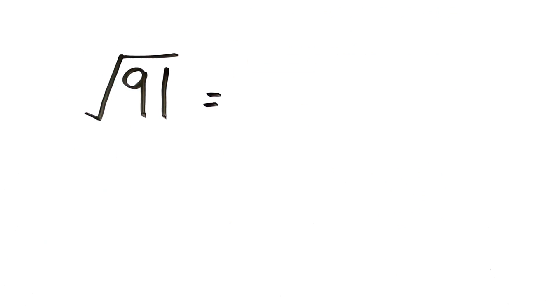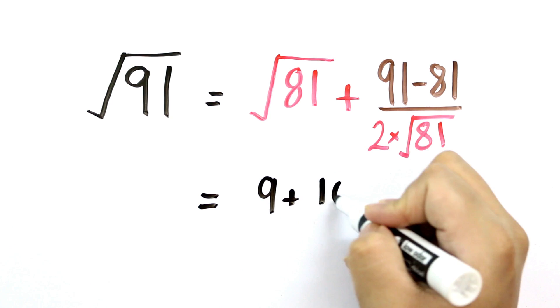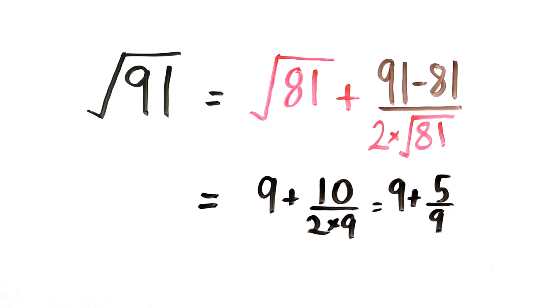Let's find the square root of 91. So it will be equal to root of 81 plus 91 minus 81 divided by 2 into root 81 which is equal to 9 plus 10 upon 2 into 9. So our answer is 9.55.